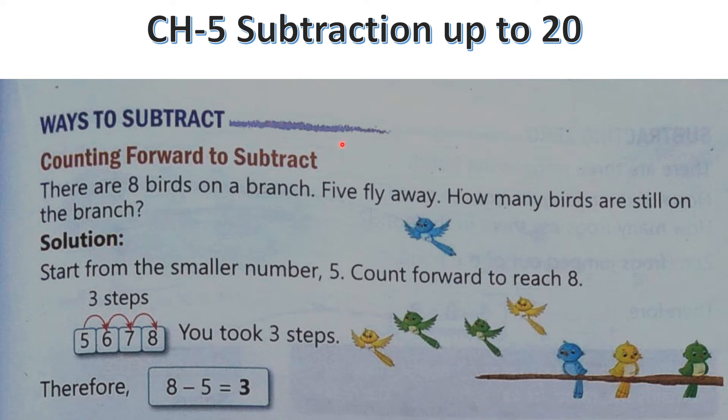Hello everyone, we are reading chapter 5 that is subtraction up to 20. So the ways to subtracting, there are two ways to subtract. One is counting forward to subtract and another one is counting backward to subtract. Got it children?